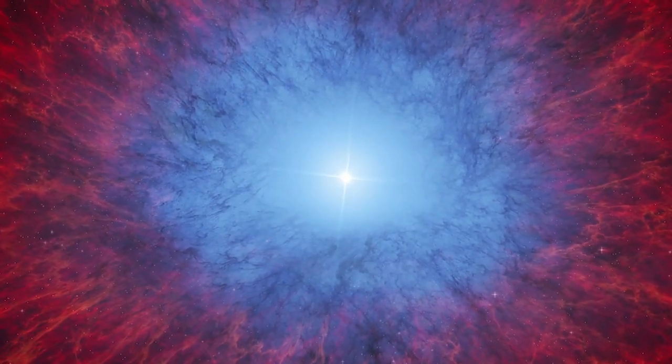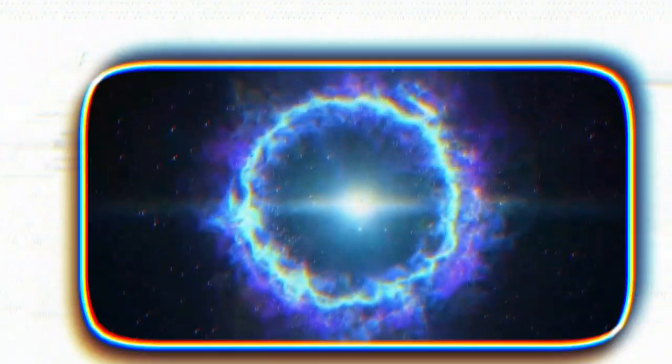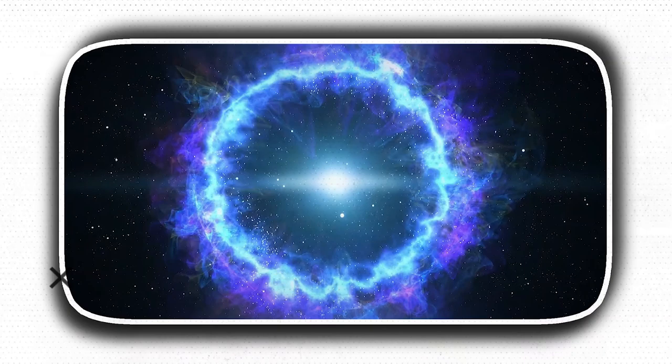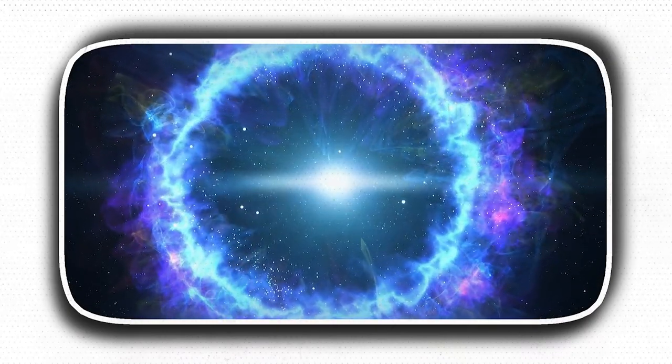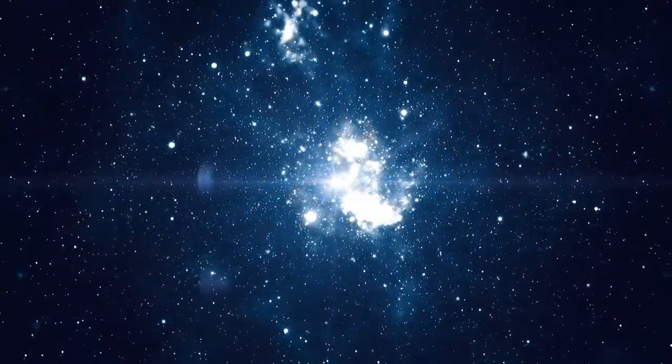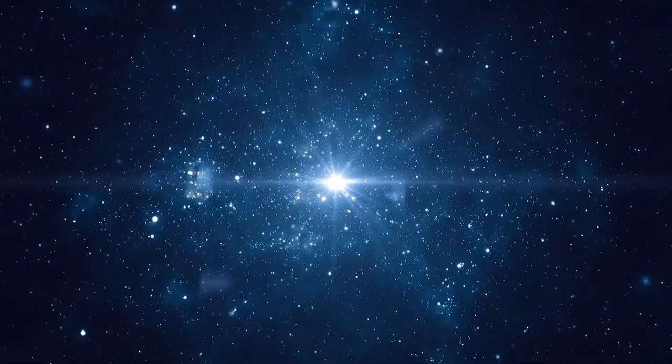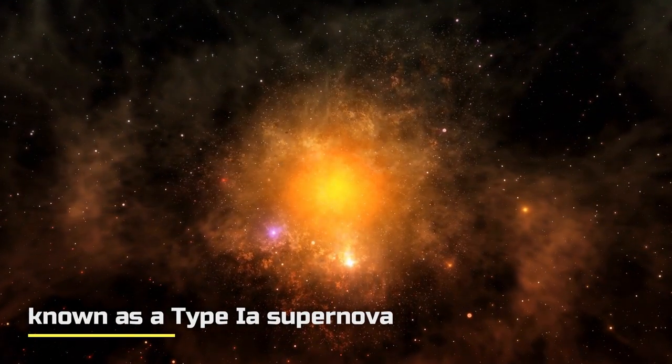Although white dwarfs are only slightly larger than Earth, they have a mass comparable to that of stars. They are therefore massive objects with gravitational fields potent enough to draw matter from any nearby companion stars. When enough material has accumulated on the white dwarf from this flow, it bursts in a thermonuclear detonation known as a Type Ia supernova, which often obliterates the star.